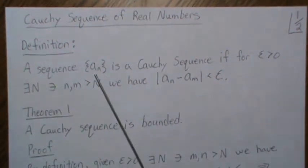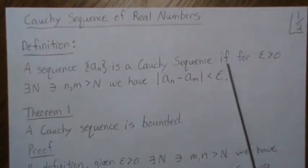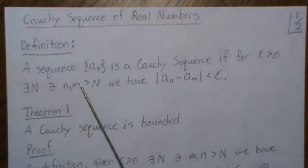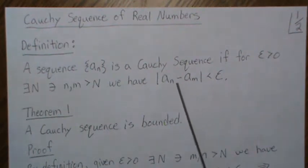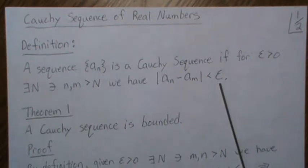A sequence A_n is a Cauchy sequence if for epsilon greater than zero, there exists an N such that n and m are greater than capital N, we have that the difference between any two terms past this capital N are less than epsilon.